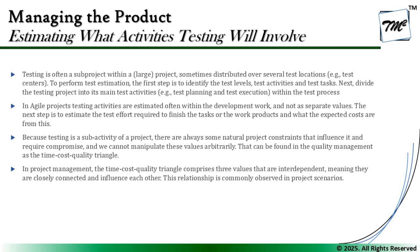In agile software development projects, testing activities are often estimated within the development work rather than as a separate value. The whole-team approach means estimations are done by the entire team together. Test effort becomes part of the story estimation — the team gathers to estimate as a single unit: what will it take to work on this story in terms of design, development, and testing? Each member contributes their perspective, for example saying 'we would need at least two or three story points to work on this.'